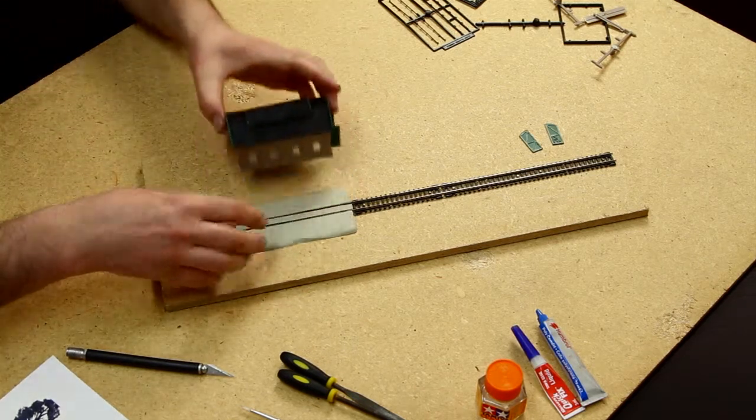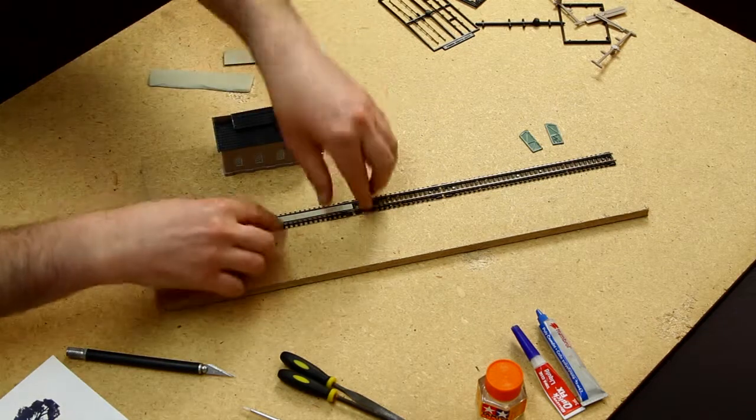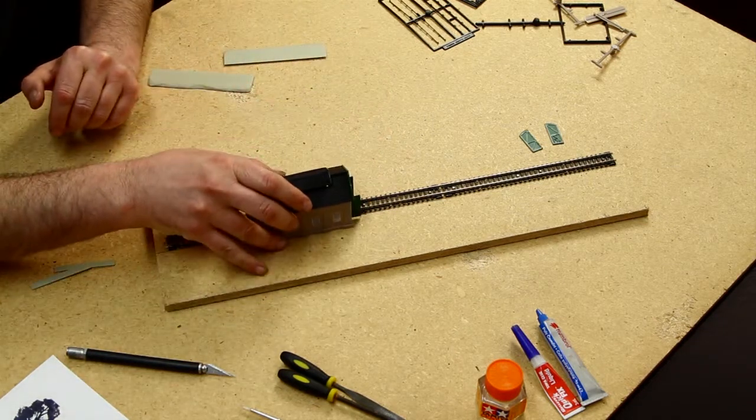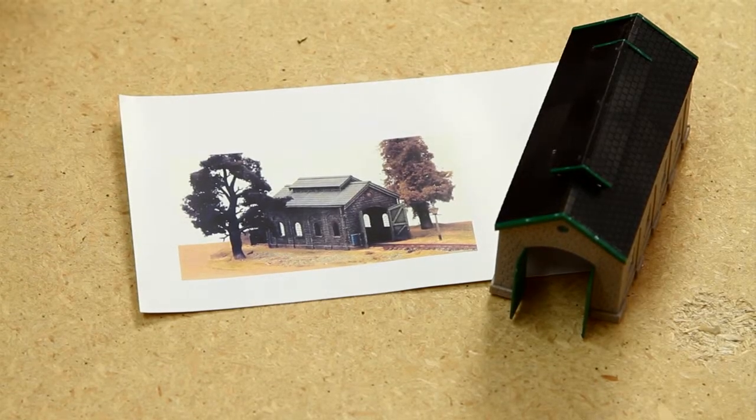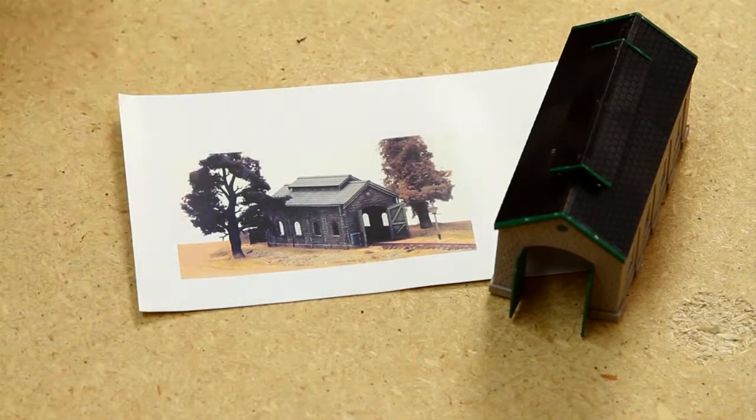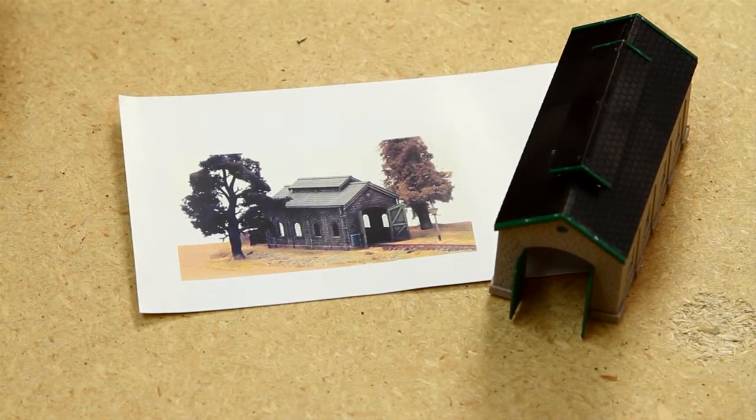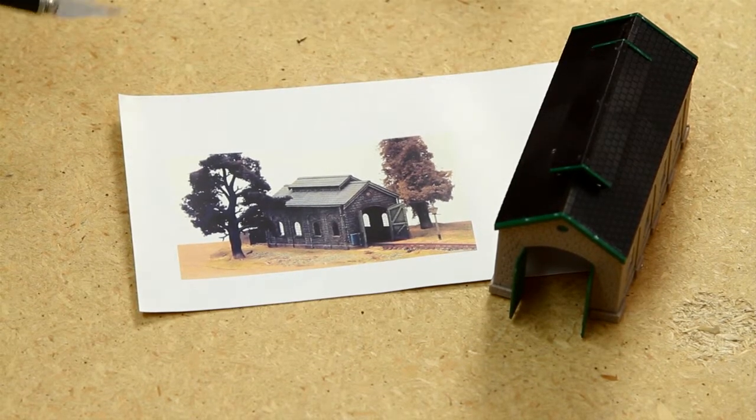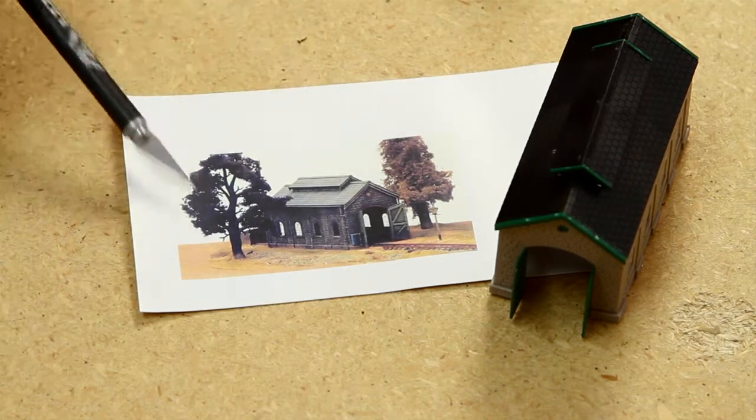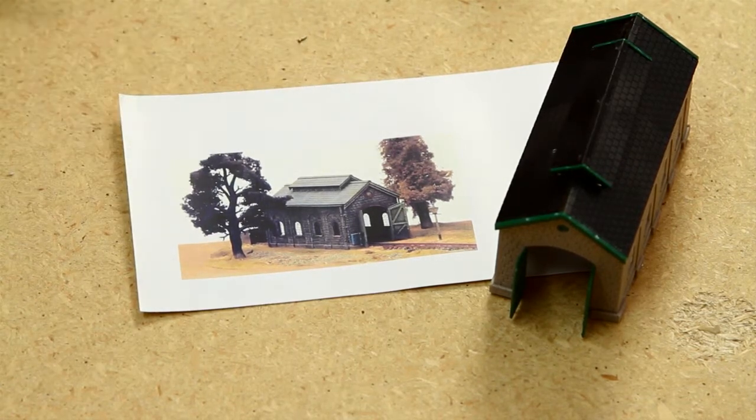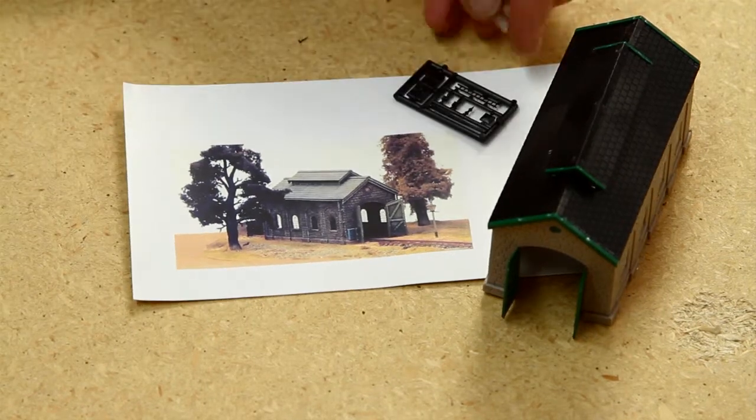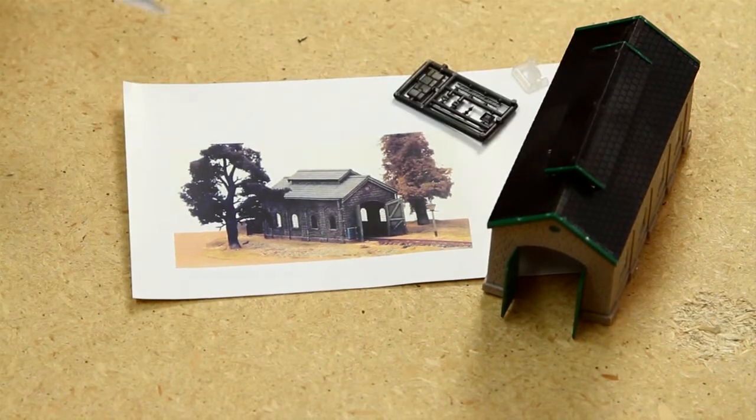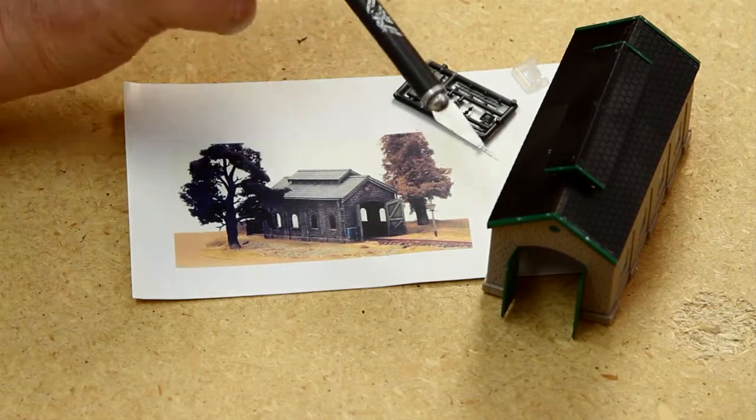Or you can use it without the base. Now that you have built this kit straight from the box, once you've painted it and weathered it up and actually put it onto your layout, it can look very much like this picture here. That little bit of light there also comes in the kit, as well as a little bit of guttering for along the sides.